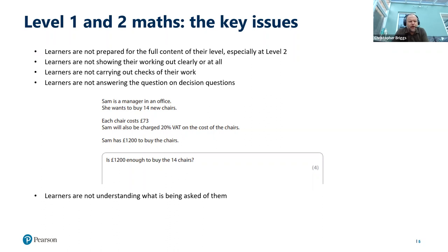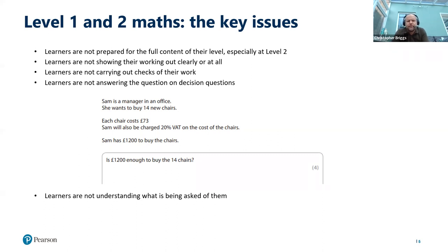The next issue is that learners are not answering the question on decision making questions. For example, the question asks: is £1,200 enough to buy the 14 chairs? This is a yes or no question, and learners need to engage and say yes or no when giving their answer. Finally, learners are not understanding what is being asked of them — they're looking at questions and thinking, I don't know what I need to do here.